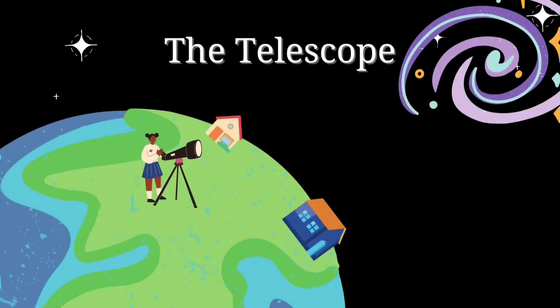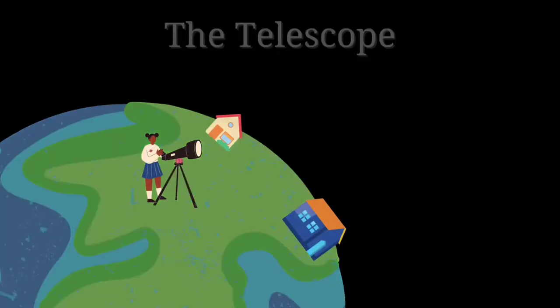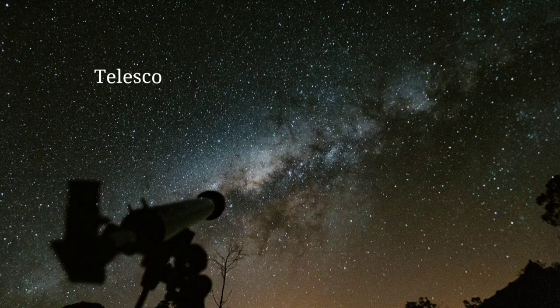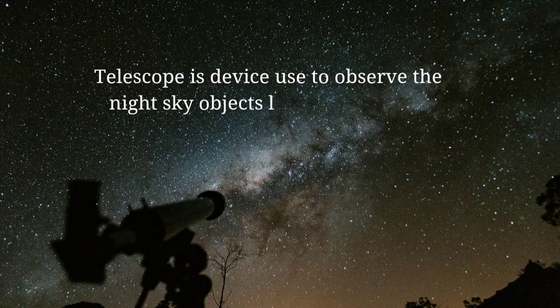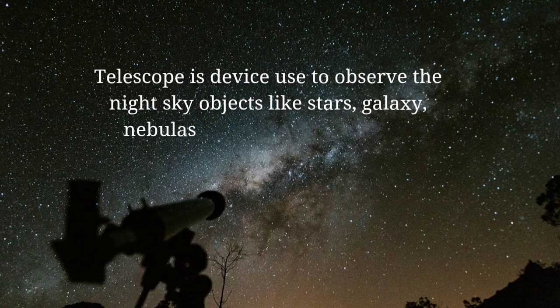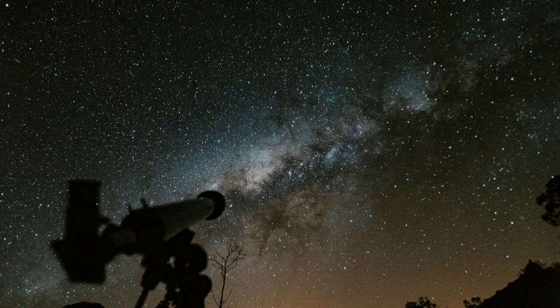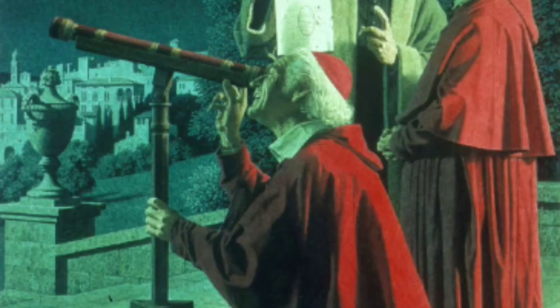Telescopes and Binoculars. A telescope is the device used to observe the stars, planets, and deep sky objects in the night sky. It was first discovered by Galileo Galilei in the early beginning of the 17th century. He was the first one to observe the craters of the moon, Jupiter and its large moons, and phases of Venus.